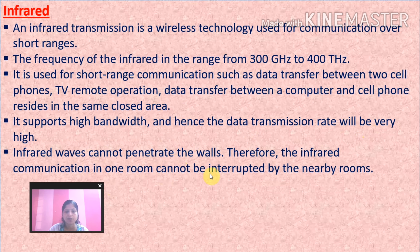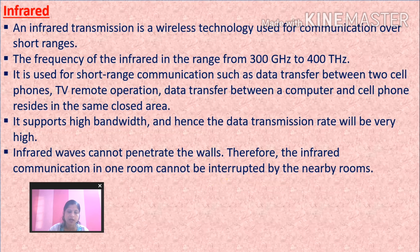Infrared waves cannot penetrate walls, therefore infrared communication in one room cannot be interrupted by a nearby room. For example, if your TV is in another room and you are in a different room, using the remote will not work because these rays cannot penetrate through walls. However, this also means there is no interference between rooms — you can use Bluetooth in one room and a TV remote in another without any issue.